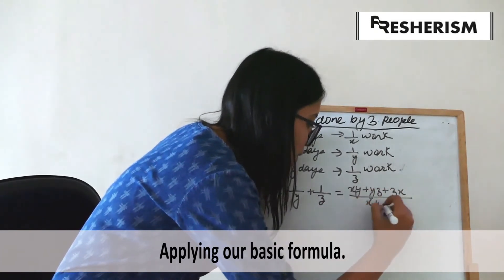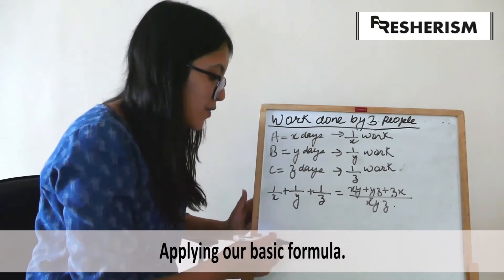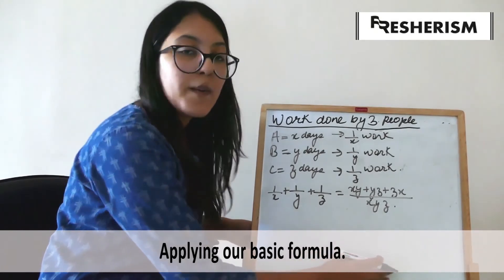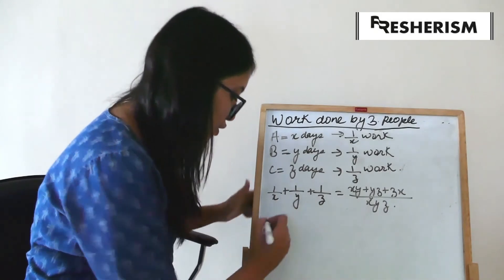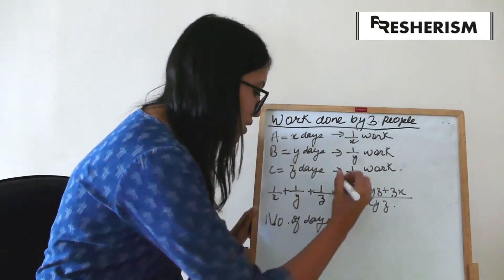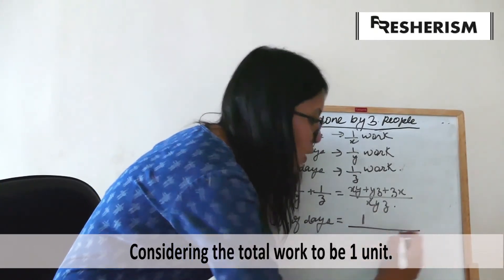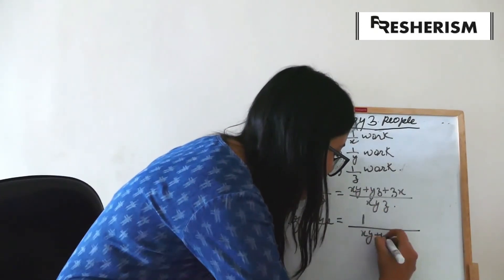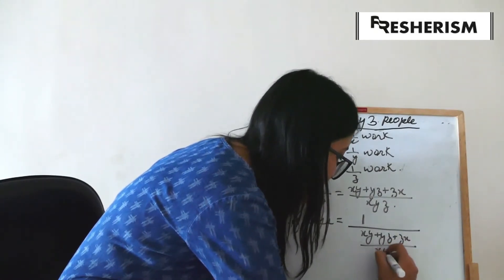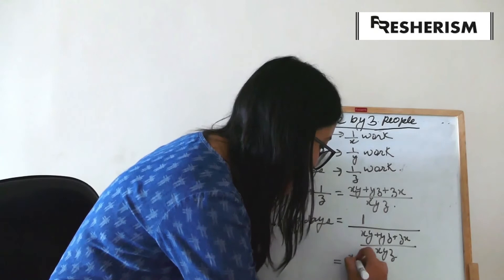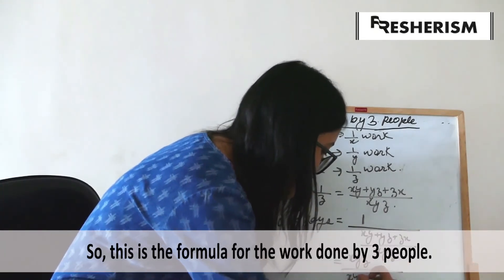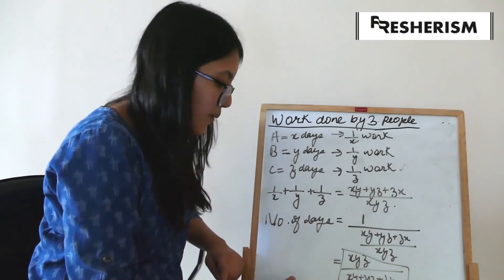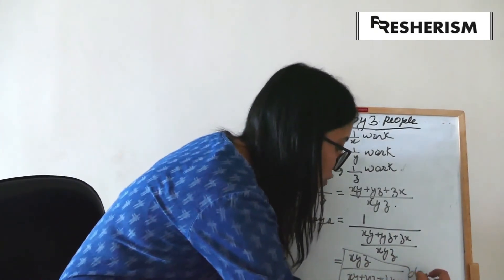Now, we know that the number of days required to complete the work equals the whole work to be done upon the amount of work done in 1 day. Considering total work as 1, the number of days required will be XYZ upon XY plus YZ plus ZX. Hence, if 3 people work together, they will require this many number of days to complete the work.